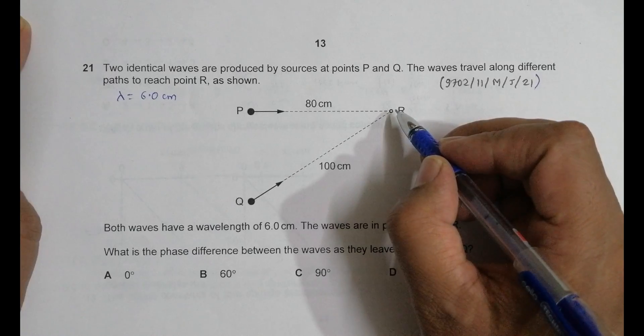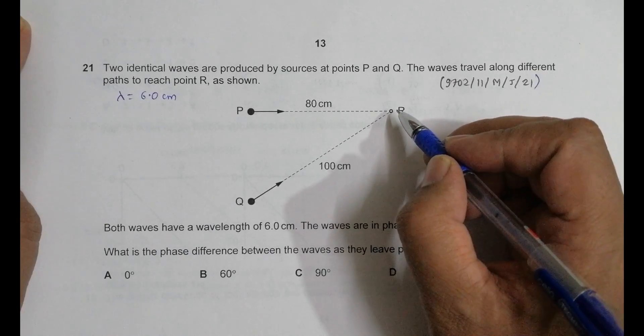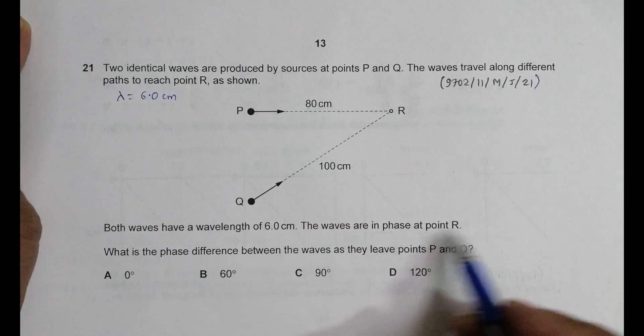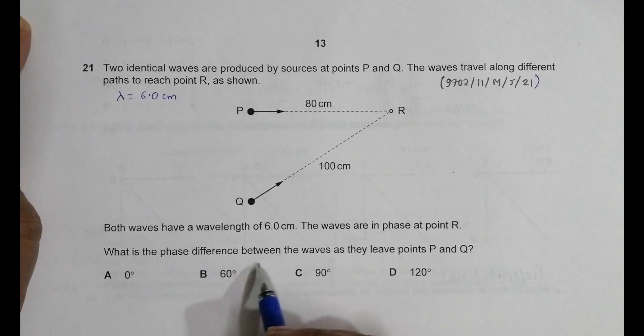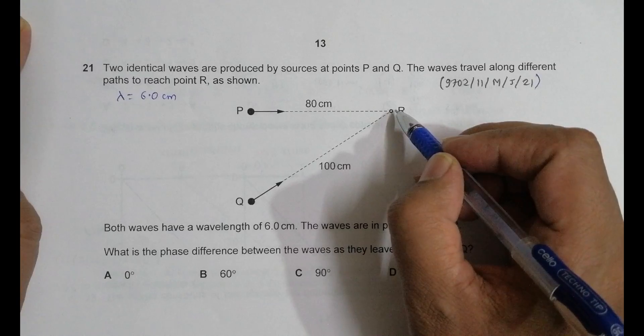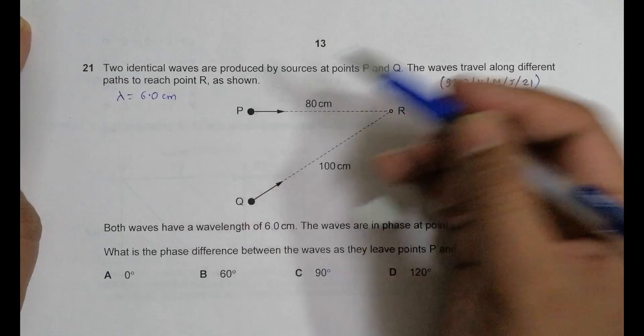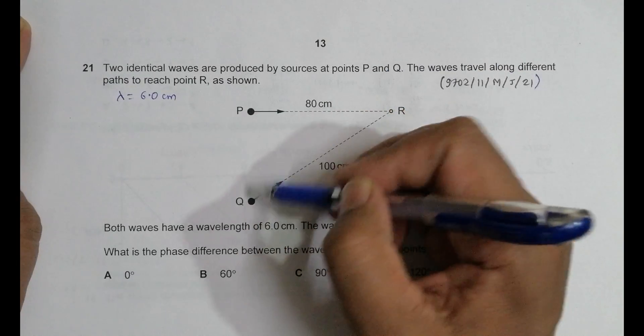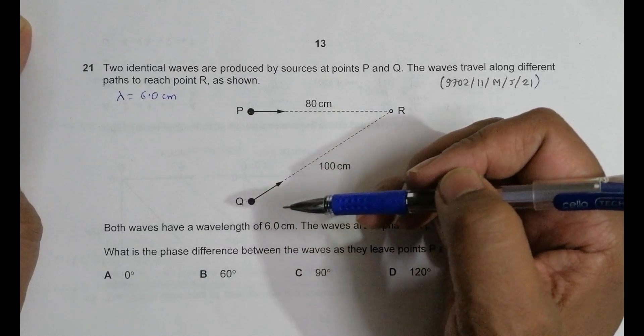If it is some infrared wave it will have a higher intensity there and so on. So in phase, what is the phase difference between the waves as they leave points P and Q? So if they are in phase here, of same phase here, what is the phase difference at the sources here and here?